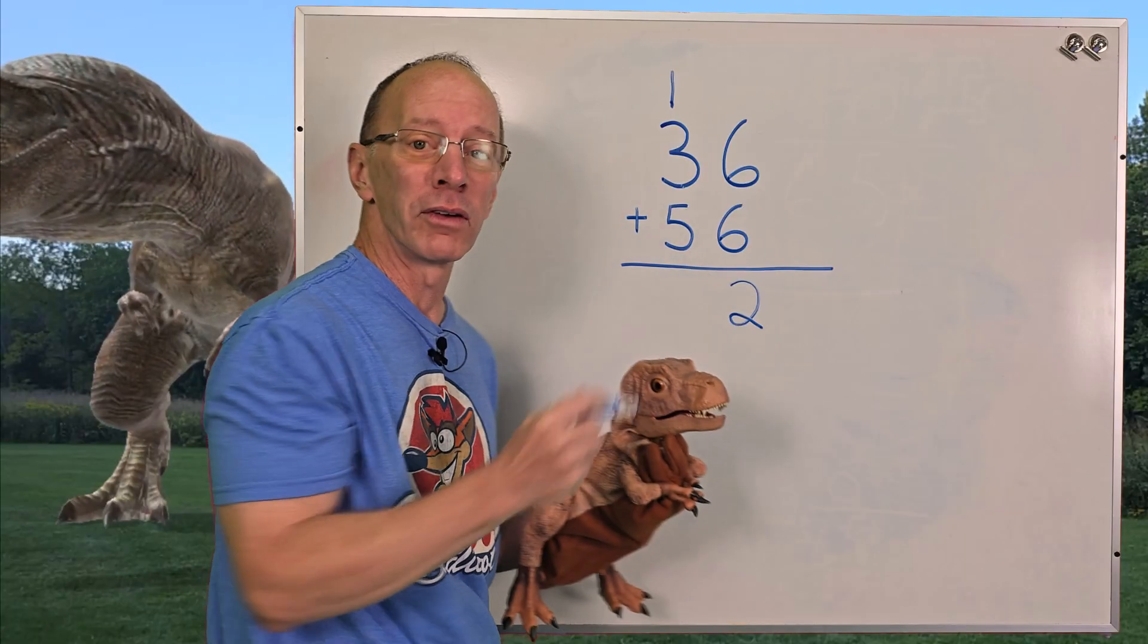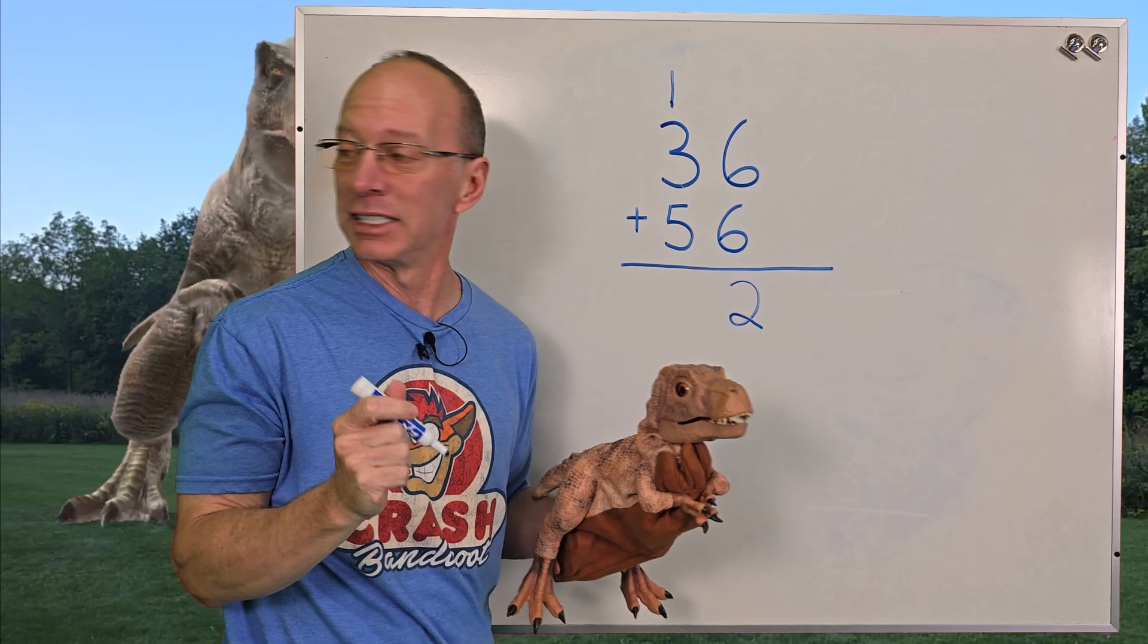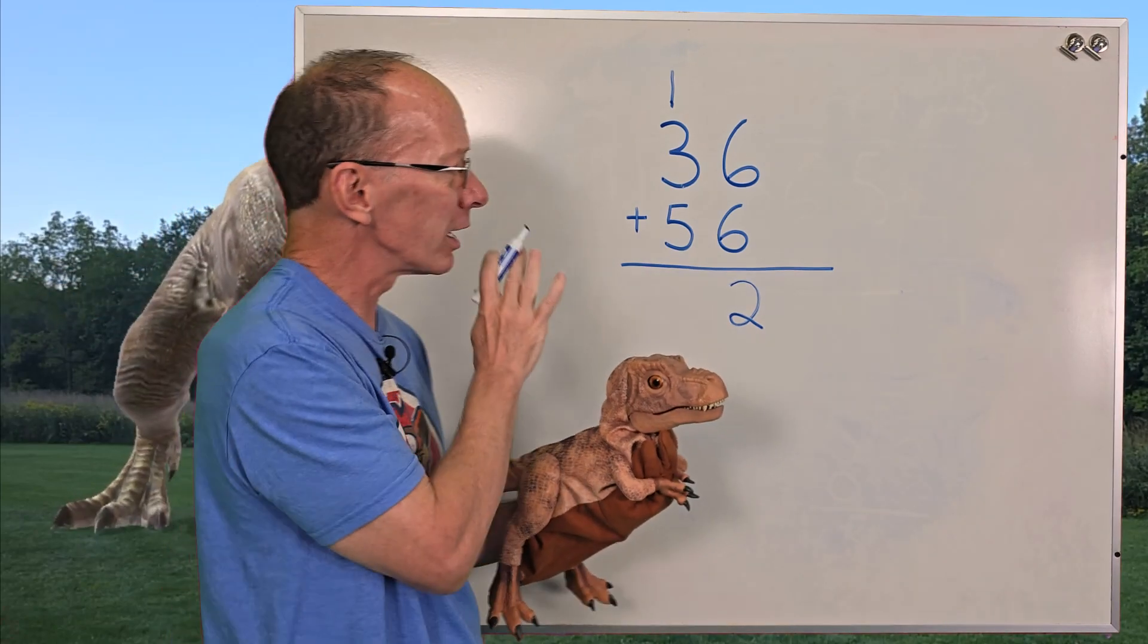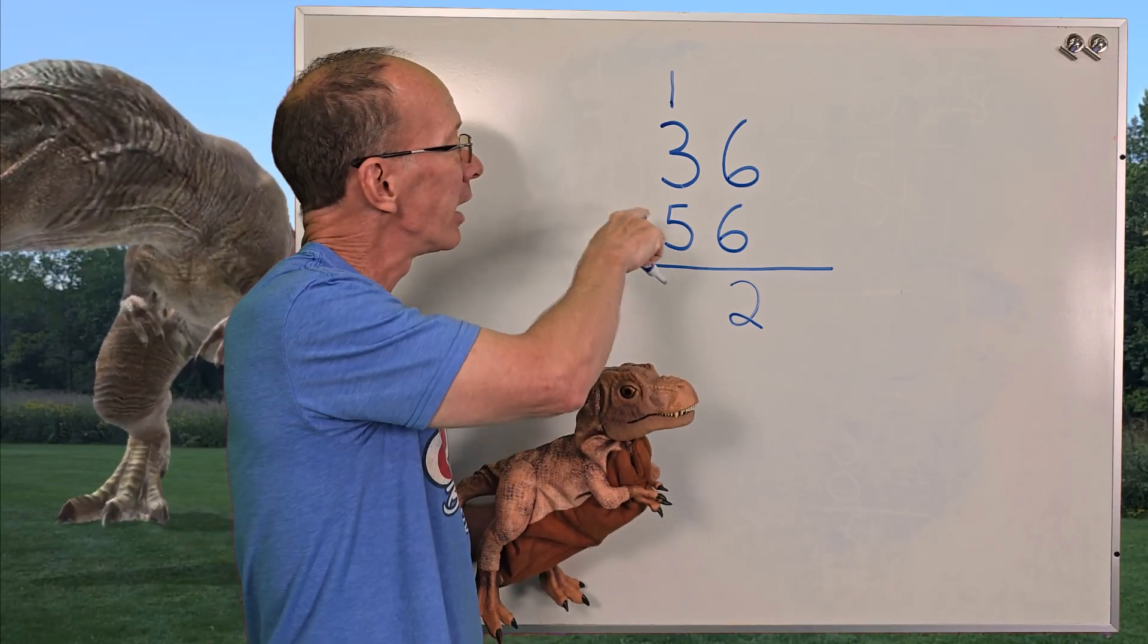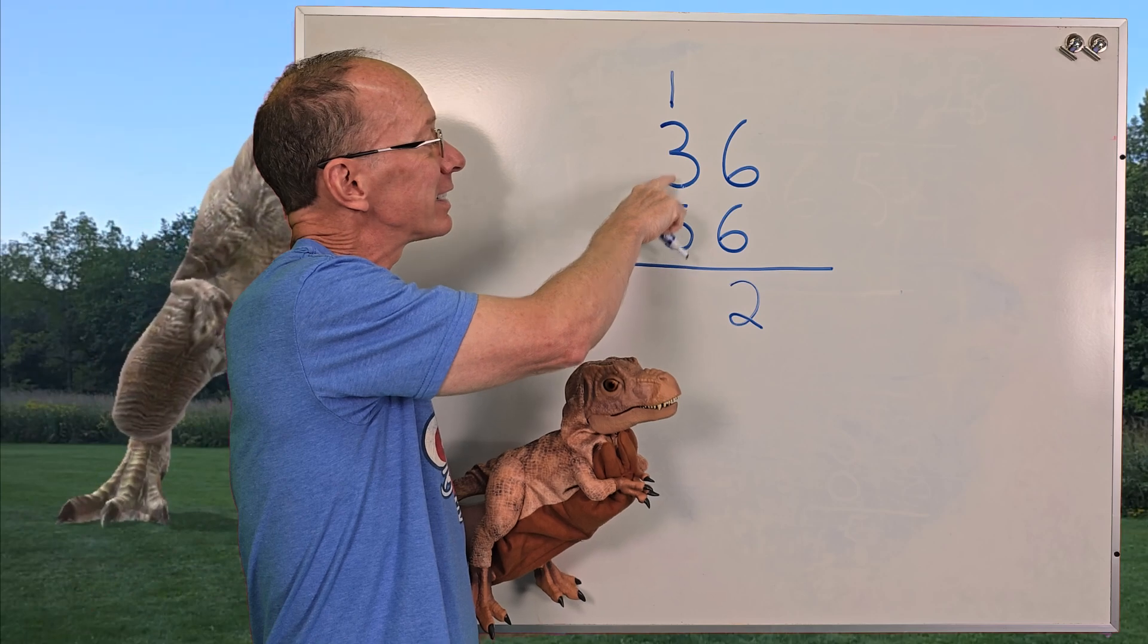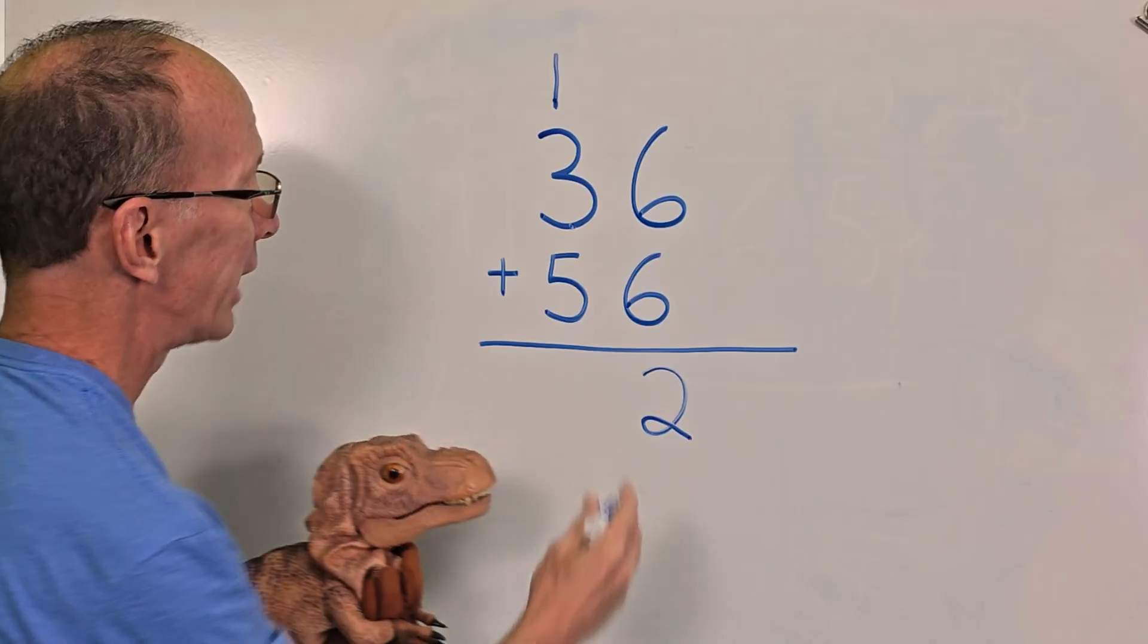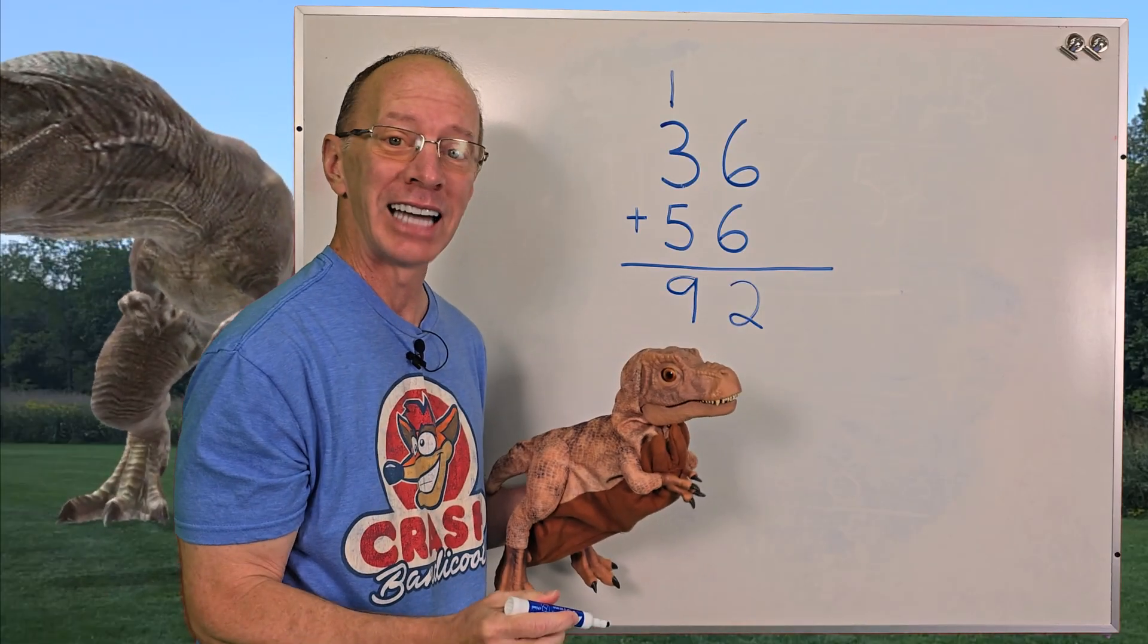So I put the 2 right here, and then I carry the 1 and I put the 1 right up there. Oh golly, the mother T-rex over there is... I think she wants the baby back. I'll bring it back, hold on there. So now I'm going to add the tens. All right, so I add 5, 6, 7, 8. Don't forget to add that 1 up there. So that would be 9, so our answer would be 92.